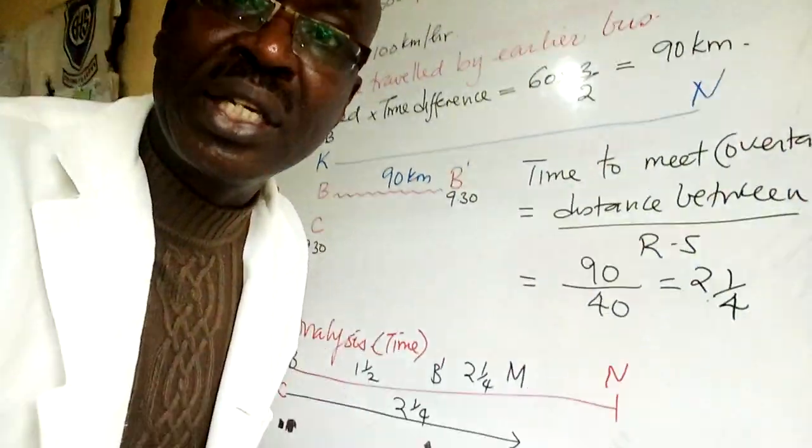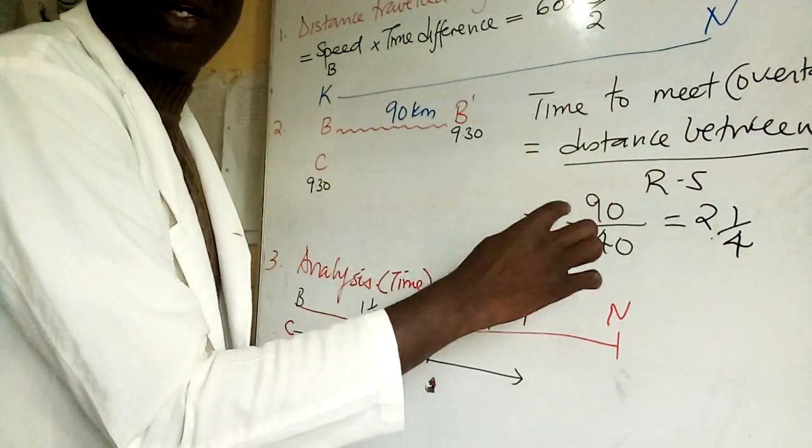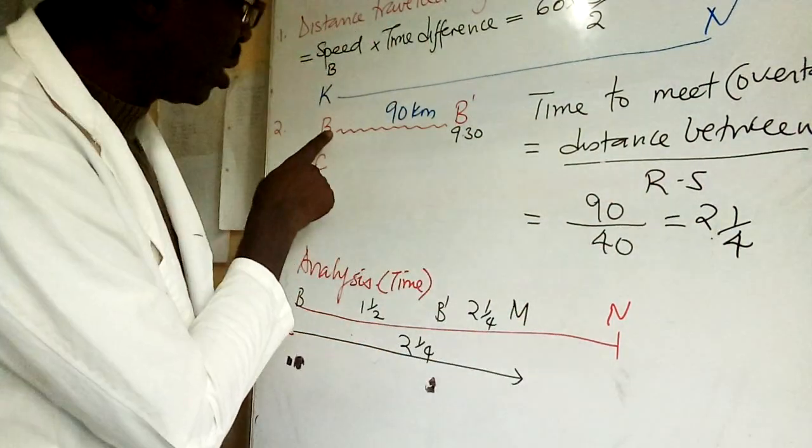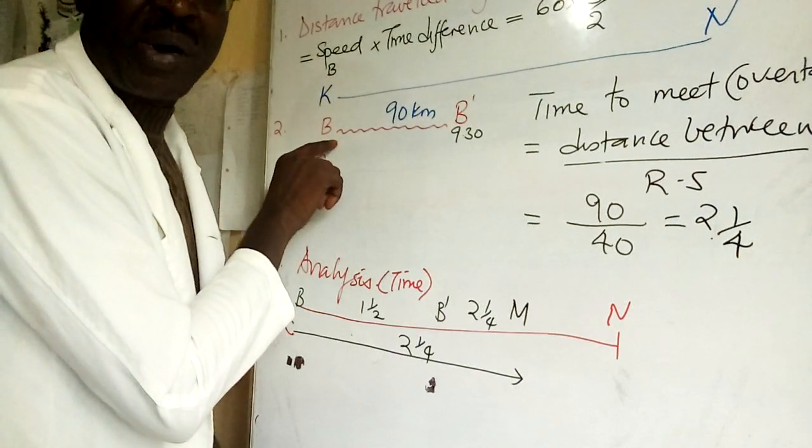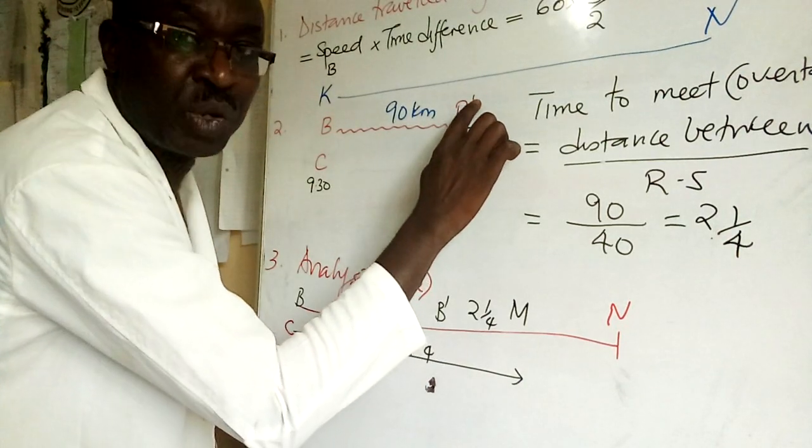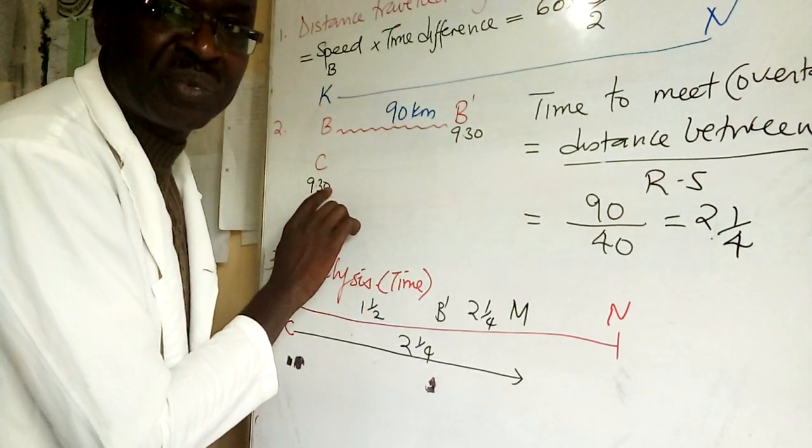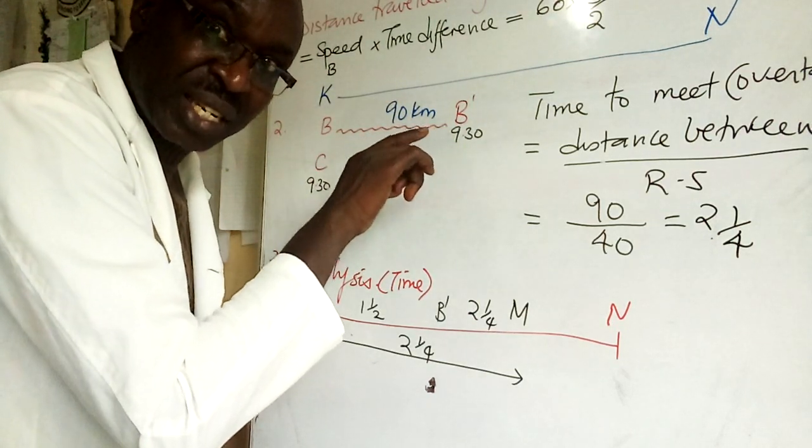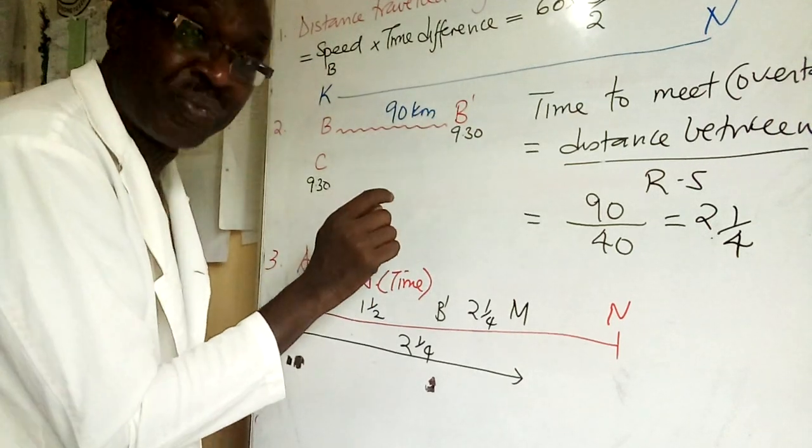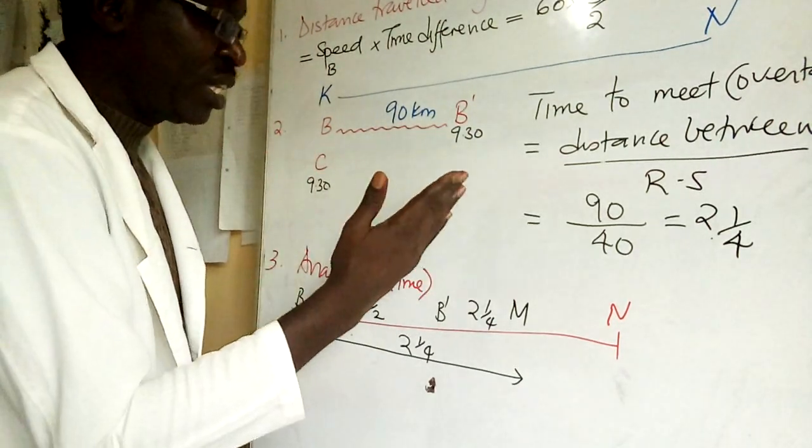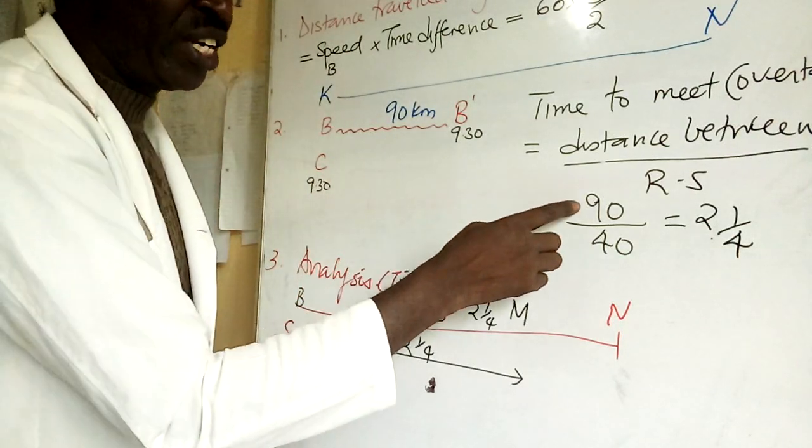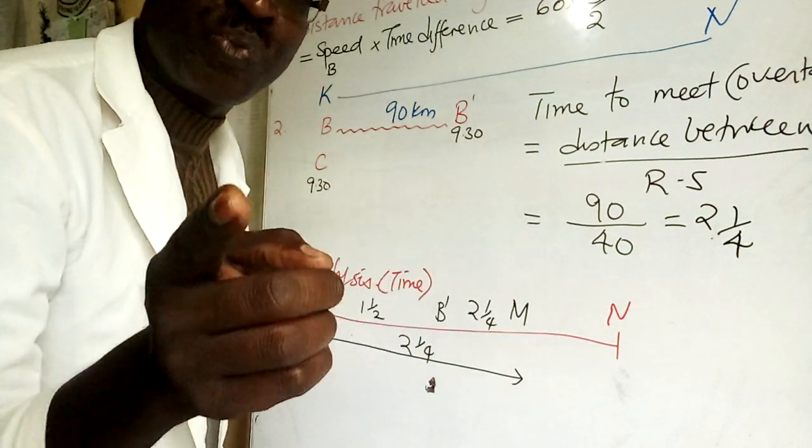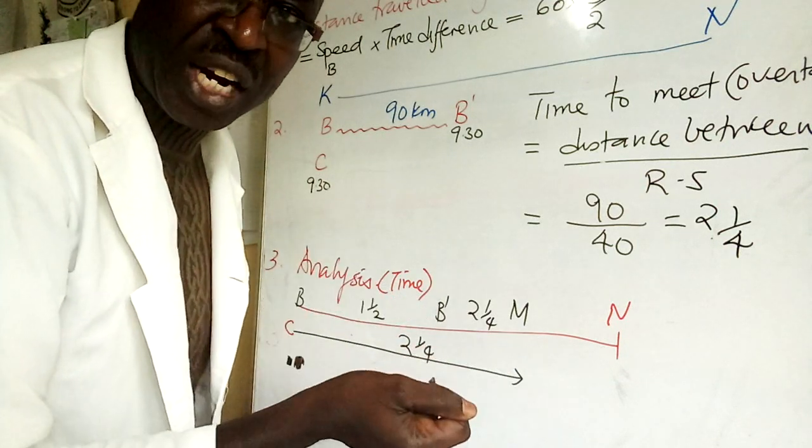I want to focus down a bit here. Time to meet or overtake is distance between them. The bus initially was here, but its new position is here. So this is the common time. The car is leaving at 9:30, but the bus went in. So at 9:30 we can tell how far these two are separated: 90, divided by 40. How did I get 40? Relative speed. They are moving in the same direction: 100 minus 60.